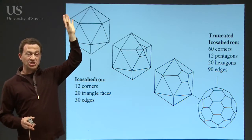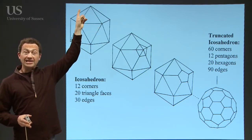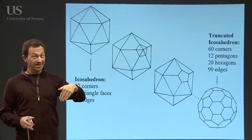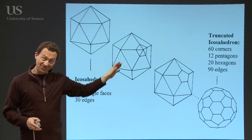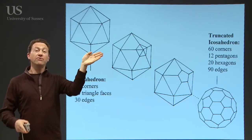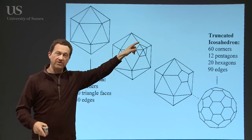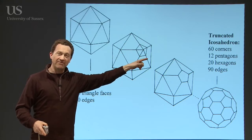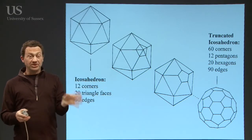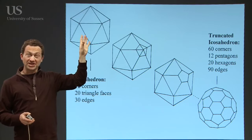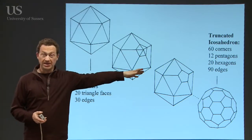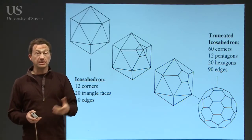Here is the icosahedron. It's a shape made out of 20 triangles, and it's got 12 corners on this structure. So if you imagine taking a sharp knife and cutting off a corner — that's what mathematicians call truncating. So if you get the icosahedron and you truncate the 12 corners, because there are five edges going to each of the corners, if you cut off one of those corners you end up with a pentagon left behind. So if you go around the 12 corners truncating them, you end up with 12 pentagons and 20 hexagons left behind. You get the truncated icosahedron — the mathematical name for a football — with 60 corners, 20 hexagons and 12 pentagons.